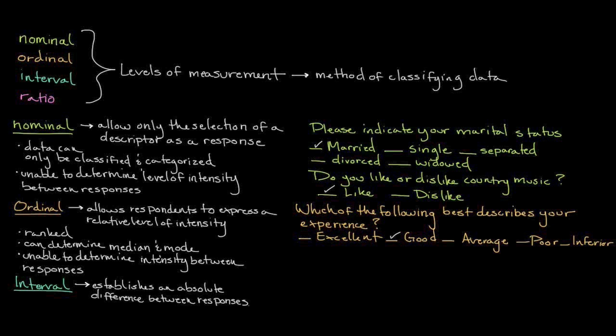Take our previous example related to restaurant service quality. Using an interval scale, we could ask respondents to rank the service they received on a 7-point scale ranging from 1, which represents not satisfied at all, to a 7, which represents extremely satisfied. By using this type of scale, we can not only determine which responses receive a higher rating than others, but also the level of magnitude between those responses.